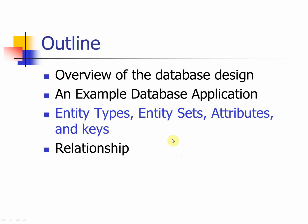In the end of our last video, we looked into an example of database applications through the company database. We looked at the database description regarding the employee, department, project, and dependents in English description. The continued part of the database ER diagram design is going to be looking into the entity part as well as the relationship part.